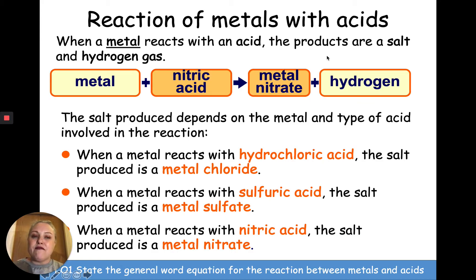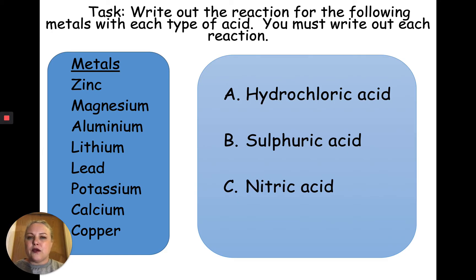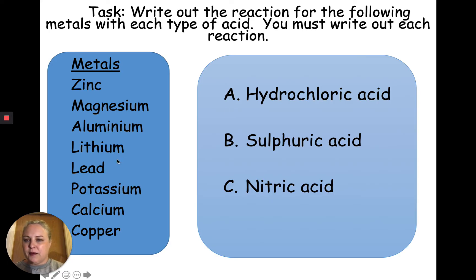We're going to look at some examples. Every single time, notice it doesn't matter what acid is used — every single time hydrogen gas is produced. Zinc plus hydrochloric acid will make zinc chloride and hydrogen. Magnesium plus hydrochloric acid will make magnesium chloride plus hydrogen. I'll do one more: calcium plus nitric acid makes calcium nitrate plus hydrogen gas.